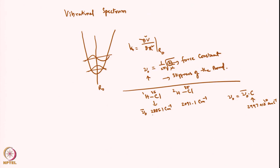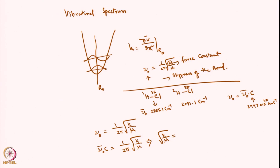Now, ν0 equals 1 over 2π times the square root of k over μ. I can rewrite this as: ν̃0 × c = (1/2π) √(k/μ), so √(k/μ) = 2π ν̃0 c. Taking the square, this implies k = (2π ν̃0 c)² × μ, or equivalently k = 4π² c² ν̃0² μ.